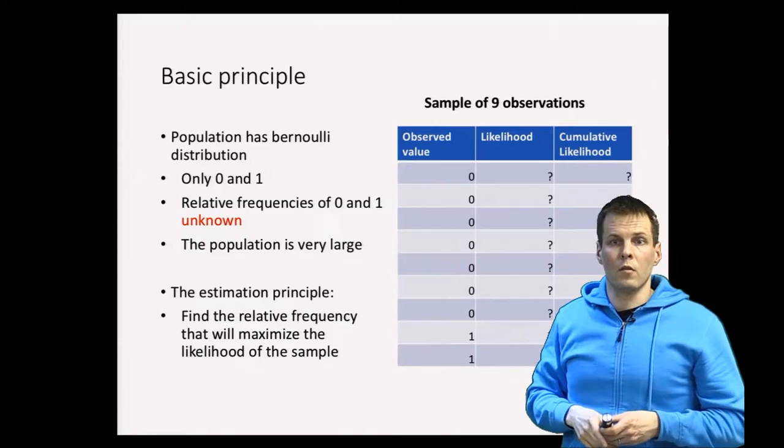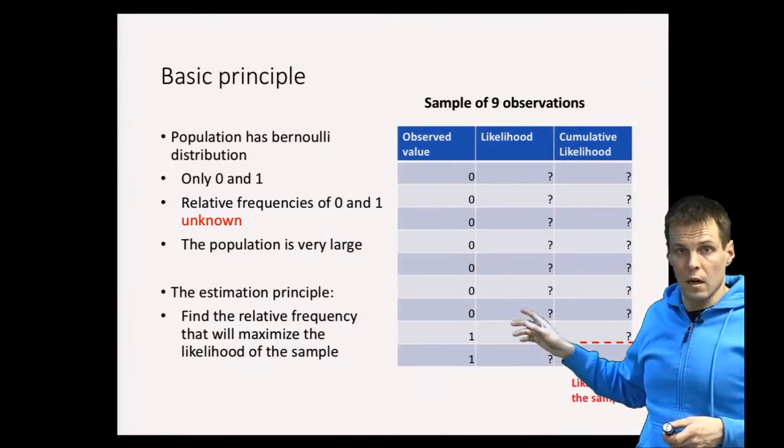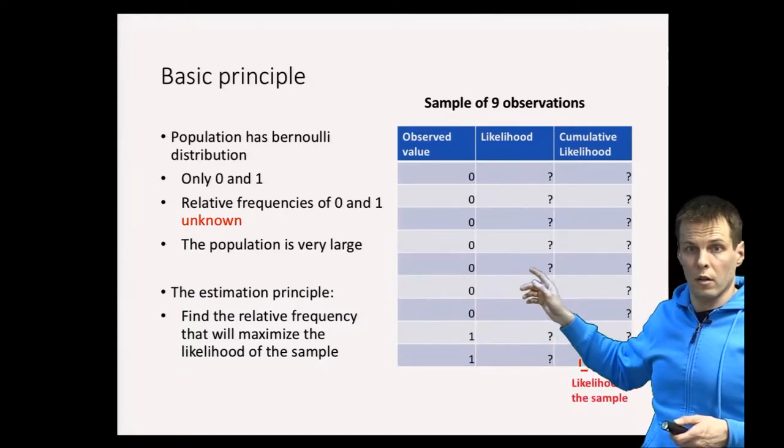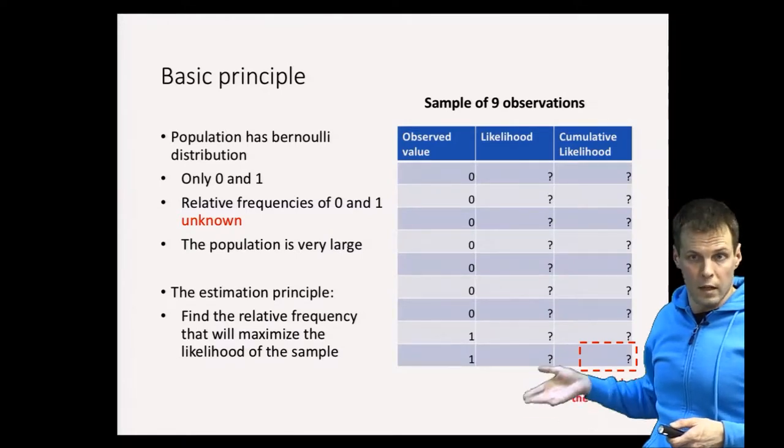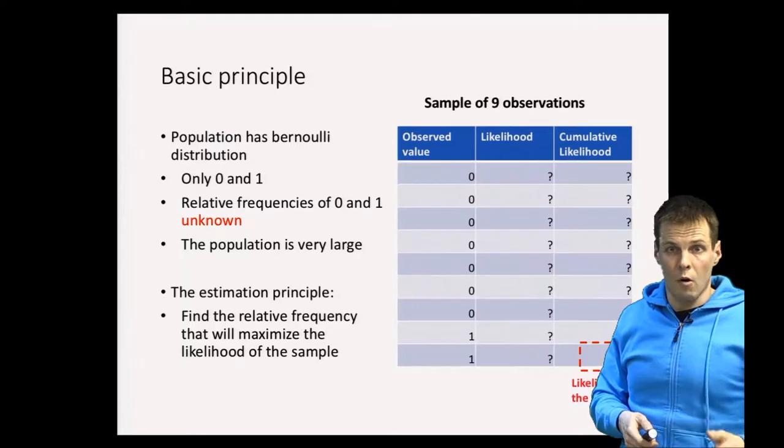Then we have some guesses for this ratio, and we calculate likelihoods. We calculate the cumulative likelihood and maximize it to find the maximum likelihood estimation by changing our model parameters.